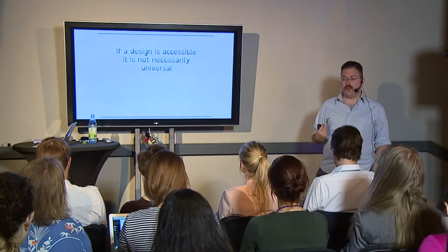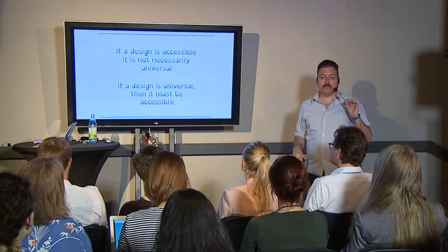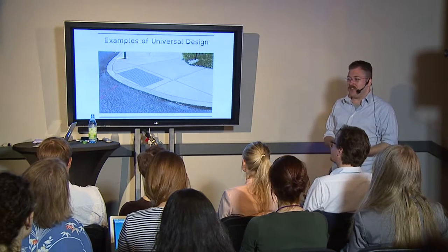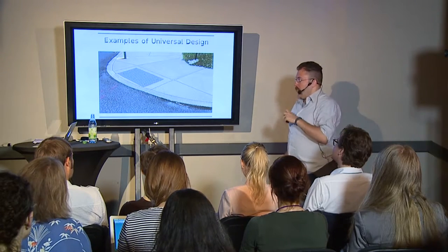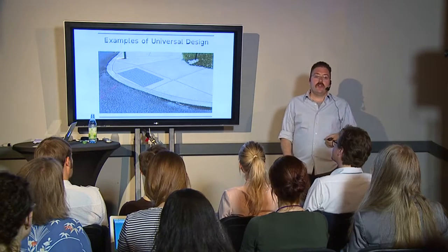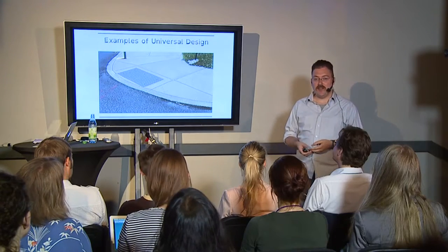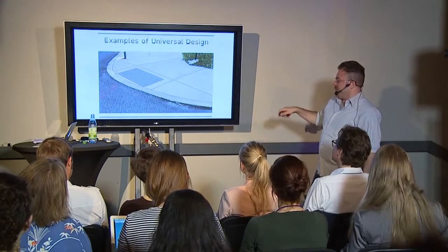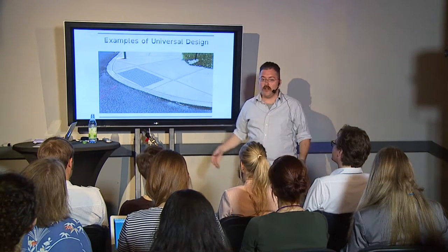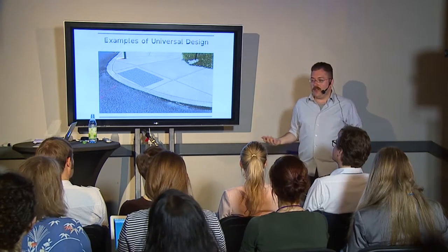If a design is accessible, it's not necessarily universal — hearing aids won't give me superhuman hearing. But if a design is universal, meaning it works for everyone, then it must be accessible. In 1960s Berkeley, California, wheelchairs were riding on the street because they couldn't get up onto the sidewalk. So they installed a ramp. Suddenly everyone could use the street more conveniently — if you were riding a bike, had a baby carriage, or were moving apartments. These were major problems solved by a more universal design.